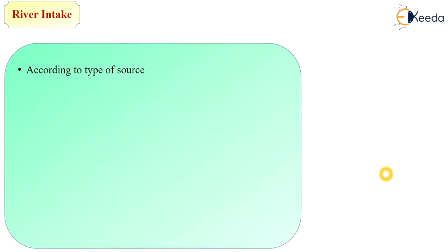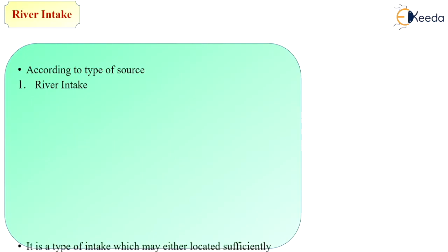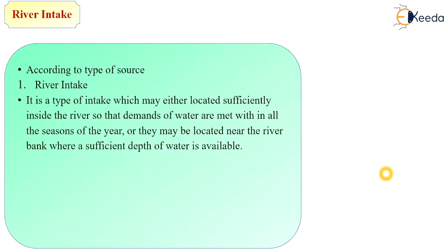According to the type of source — whether we are intaking water from a river, lake, canal or reservoir — the intake is classified as river intake, canal intake, lake intake or reservoir intake. First is river intake. It is a type of intake which may be located sufficiently inside the river so that demands of water are met in all seasons of the year, or located near the river bank where sufficient depth of water is available.